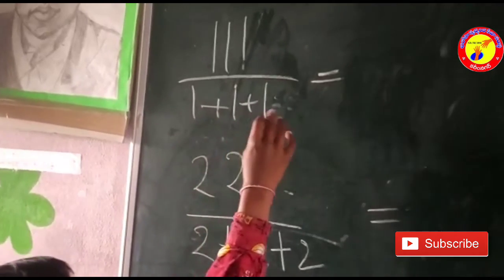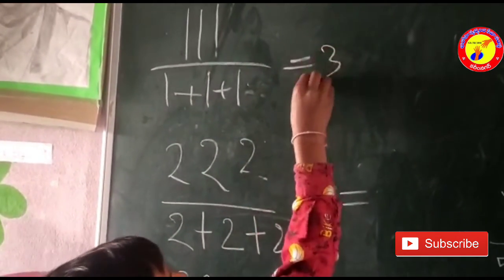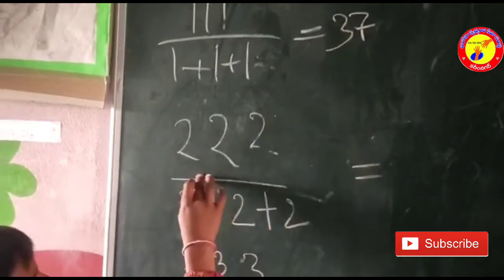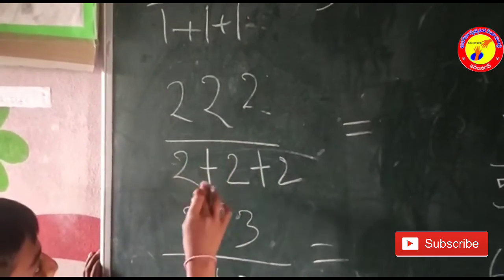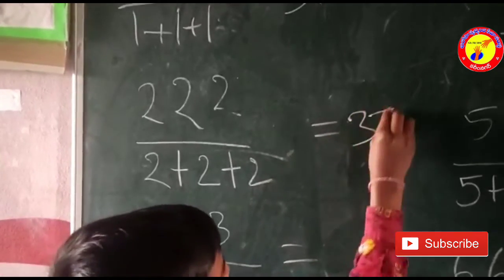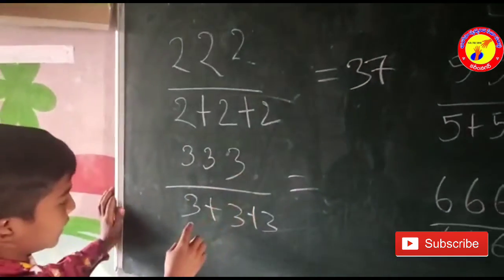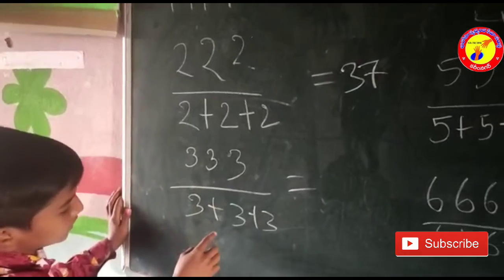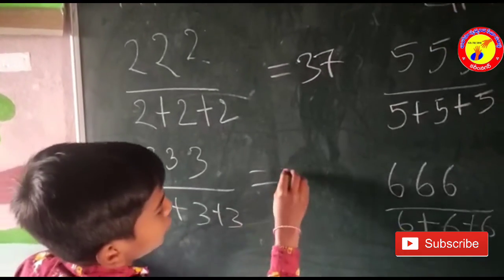111 divided by 1 plus 1 plus 1 is equal to 37. 222 divided by 2 plus 2 plus 2 is equal to 37. 333 divided by 3 plus 3 plus 3 is equal to 37.